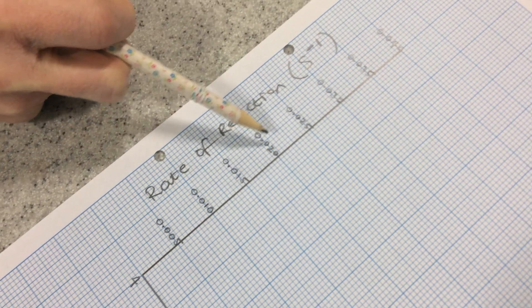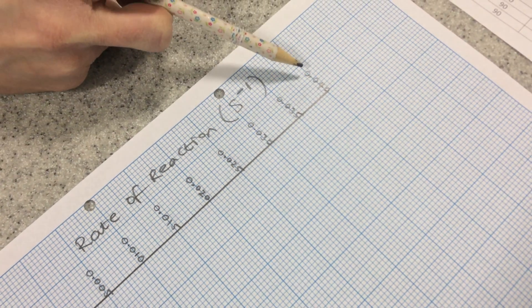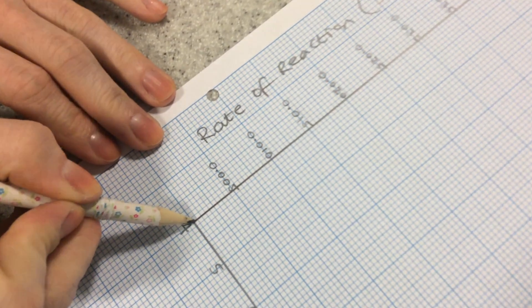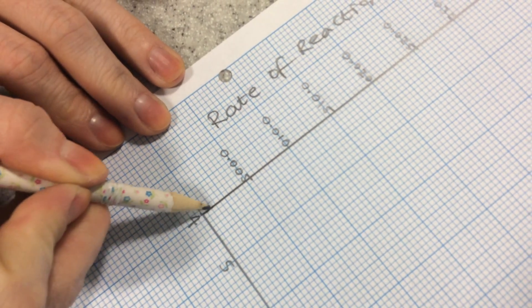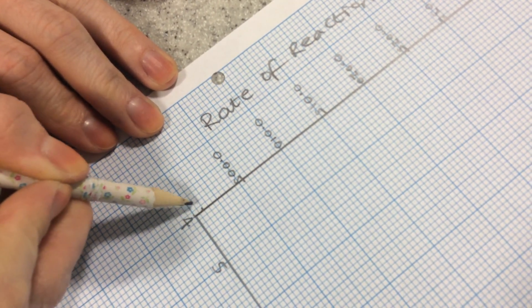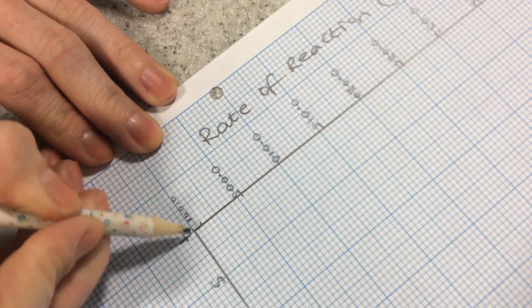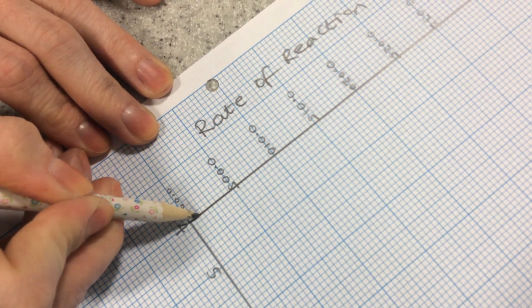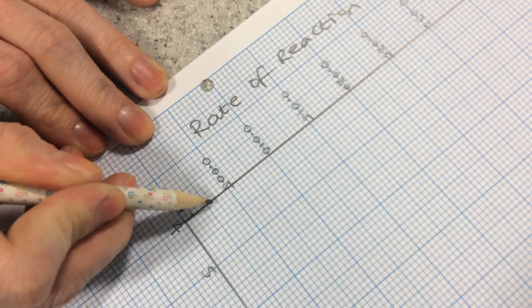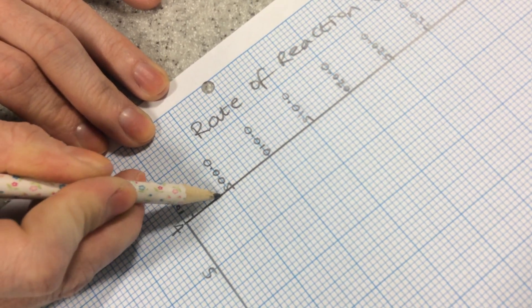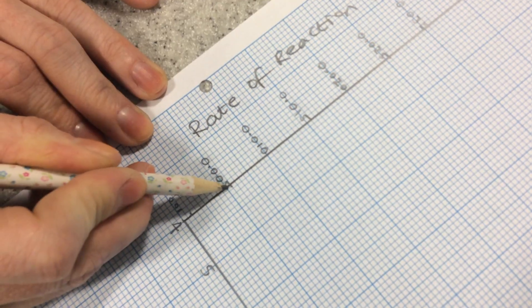and I'm going to go in 0.005 scales, so you'll see I'm going up equally as I go up the scale. So each two little squares is actually worth 0.001, so that's 0.001, 0.002, 0.003, 0.004, and 0.005.